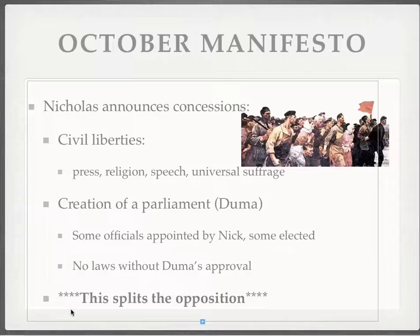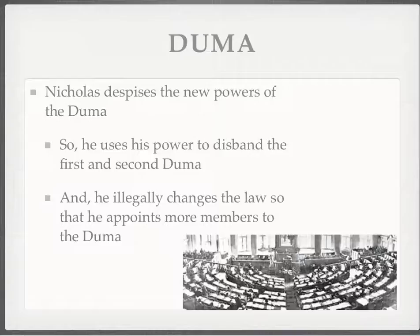The key is that this splits the opposition. The cadets — the people who wanted a constitutional democracy — said finally we have one, and they're happy. But the socialists or the Soviets don't think it has gone far enough. Because the opposition is split, Nicholas remains in power. The Duma exists, but he's going to use it to benefit himself. Nicholas has the power to disband a Duma if it can't agree, and he does precisely that with the first and second Dumas, then illegally changes the laws so he can appoint more of his own men, making it even less of a democratically elected body.